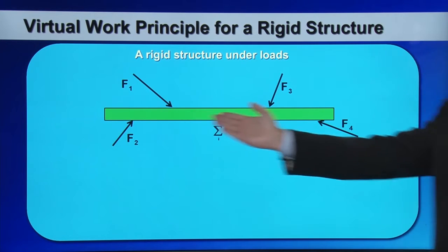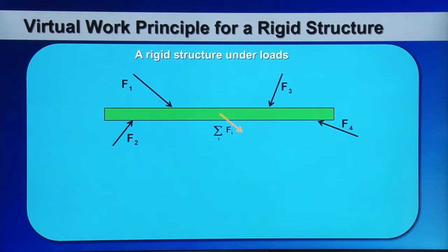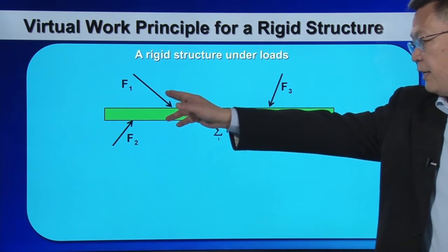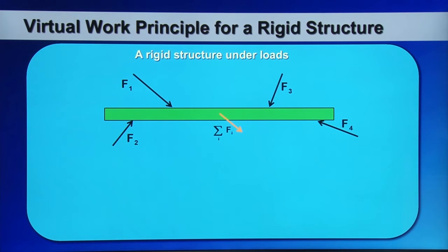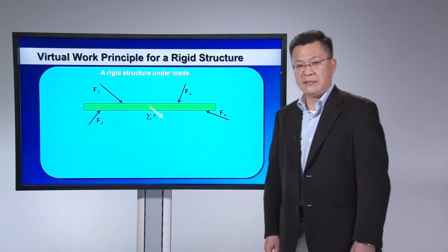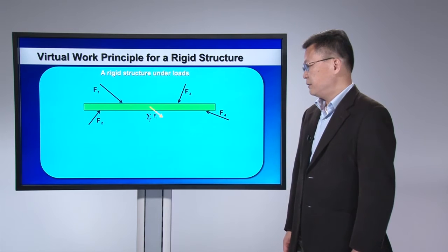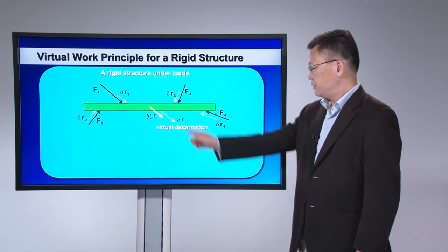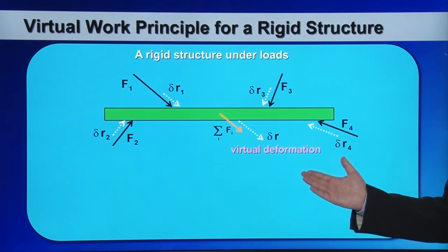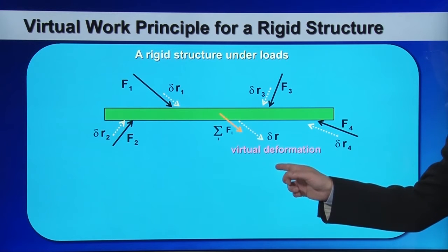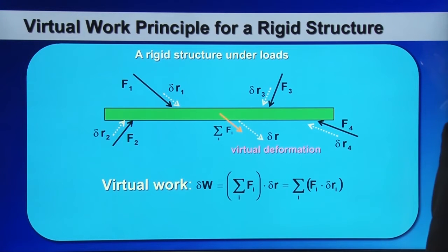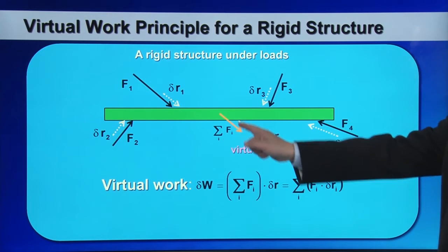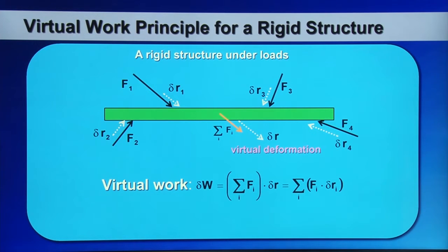Consider this rigid body structure acted upon by a set of loadings: F1, F2, F3, and F4. The summations of these forces are indicated by the orange arrows. Assume that we disturb the structure virtually with small deformations delta R — this is an imaginary deformation. The work done by such a disturbance is called virtual work, and it can be calculated by taking the summation of each force times the virtual deformation at that location.